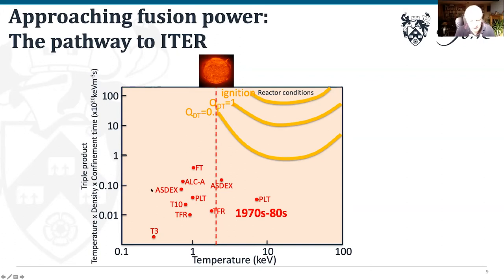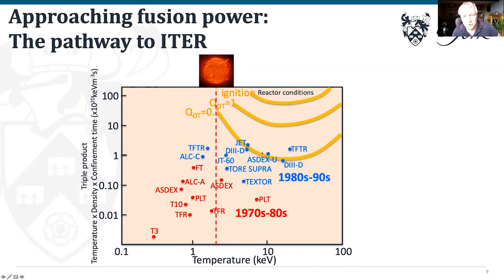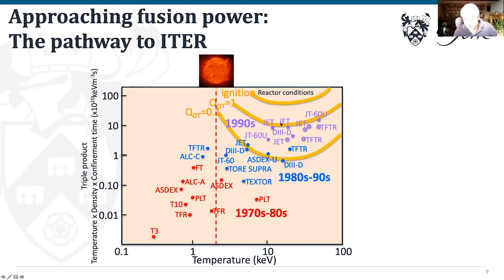By the 1980s and 90s, plasmas were reaching 100 million degrees — pretty hot. Triple products reached reasonable values, though still a factor of 100 short. Through the 1990s, researchers got cleverer at controlling plasmas with magnetic fields, and by the turn of the century they were knocking on the door of Q=1, breakeven. To go beyond this required going bigger than JET — the biggest machine at the time.